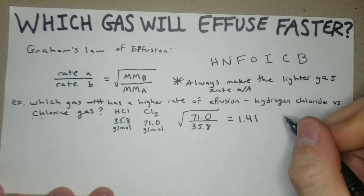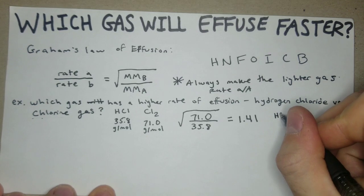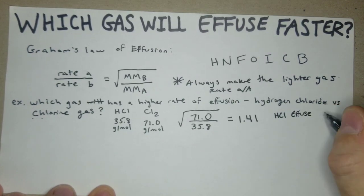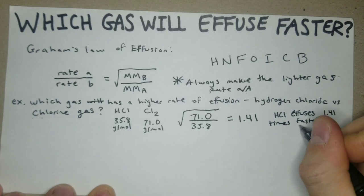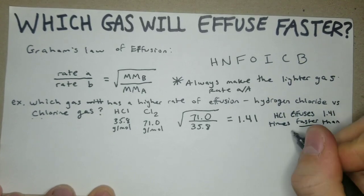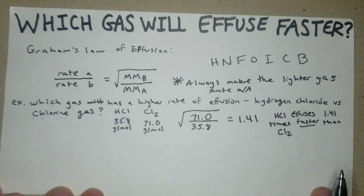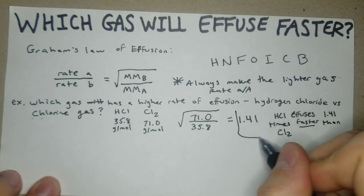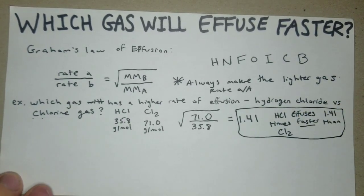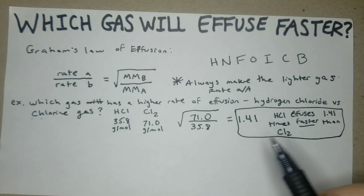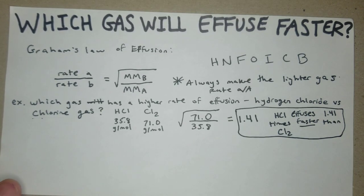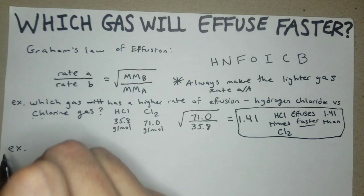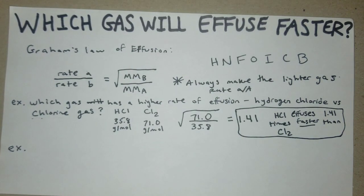This is how much faster. If I was to write this in a sentence: HCl effuses 1.41 times faster than Cl2 chlorine gas. I think just in case there's any questions since there's no units there, it's a multiple of times. I like to sometimes write like a little sentence there. We'll just do one more example of a problem here.